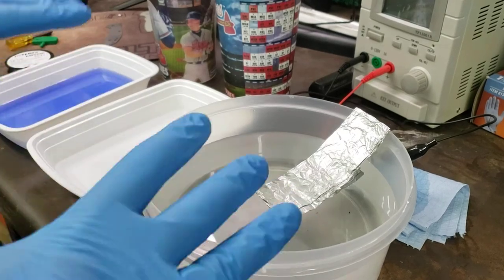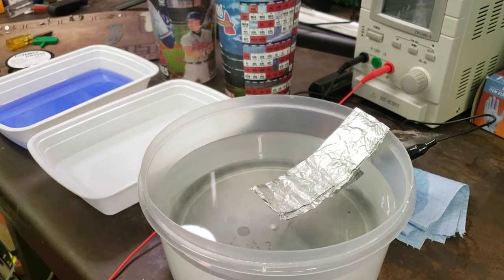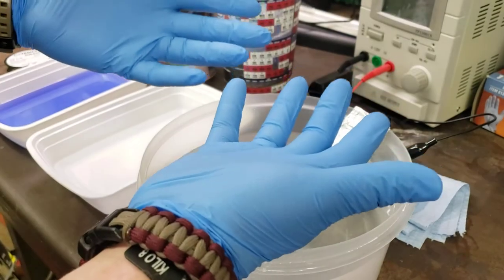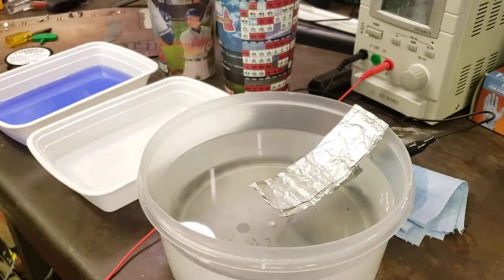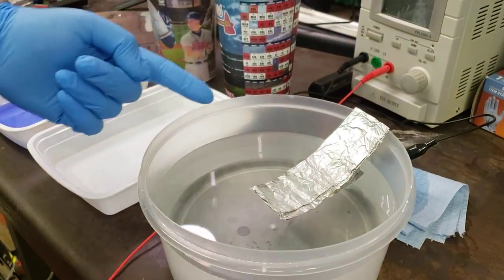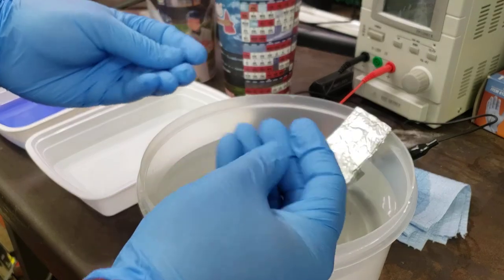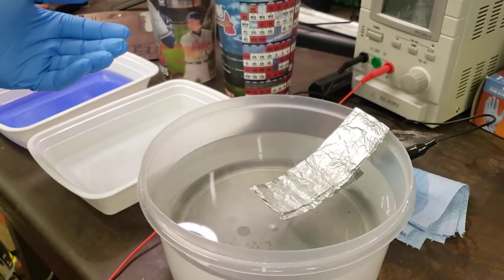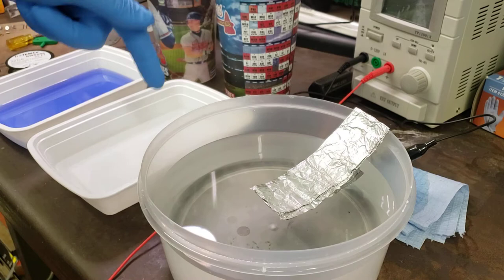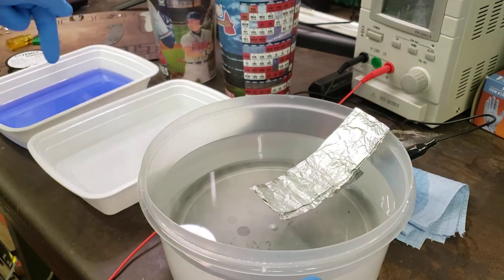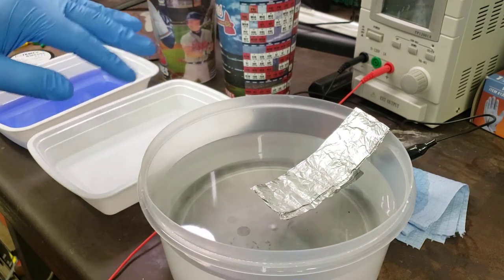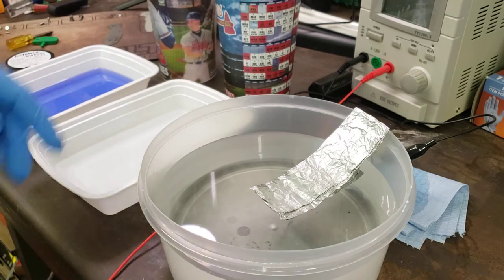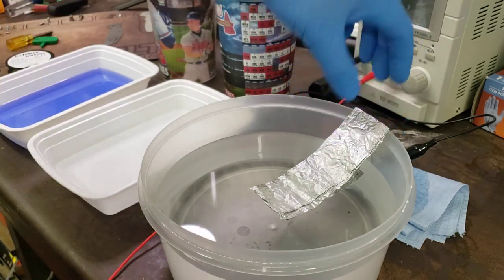All right, y'all. Here we go. This is the anodizing step. First thing you want to do is make sure your hands got gloves on them. For one, you don't want oil transfer from your skin onto whatever you're about to anodize. But for two, you're messing with some acid and some chemicals and stuff like that, and you just want to limit exposure of that stuff to your hands.